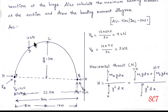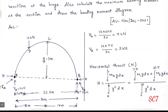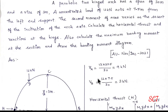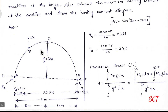Let's look at this drawing. Now, the second moment varies at the secant of the inclination of the arch. We need to calculate the horizontal thrust and the reaction at the hinges — horizontal thrust H, reaction RA, RB — and also calculate the maximum bending moment at the section and draw the bending moment diagram.